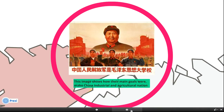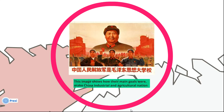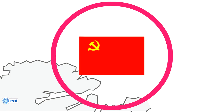This image shows their main goals: to make China an industrial and agricultural nation. The main symbol of Communism is the hammer and sickle, representing the working class and the agricultural class together. These symbols have their origin in Russia's Communism.